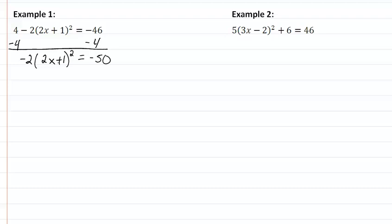By the way, if we had a square root equal to this, we'd have no solution. But because we are going to be dividing by negative 2 here, and we end up with 2x plus 1, quantity squared, equal to a positive 25, we do have a solution.